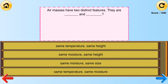Air masses have two distinct features. They are blank and blank. Answer choices: same temperature, same height; same moisture, same height; same moisture, same size; same temperature, same moisture. Correct answer: same temperature, same moisture.